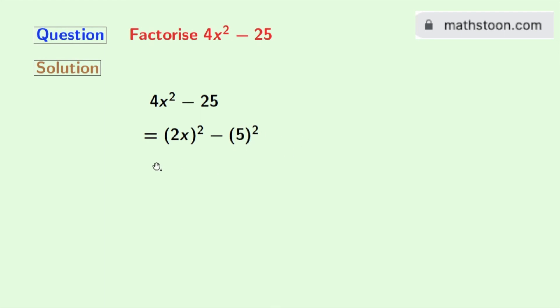So look that this is in the form of a² minus b² now, where a is 2x and b is 5. So we can apply the formula of a² minus b² in this expression.